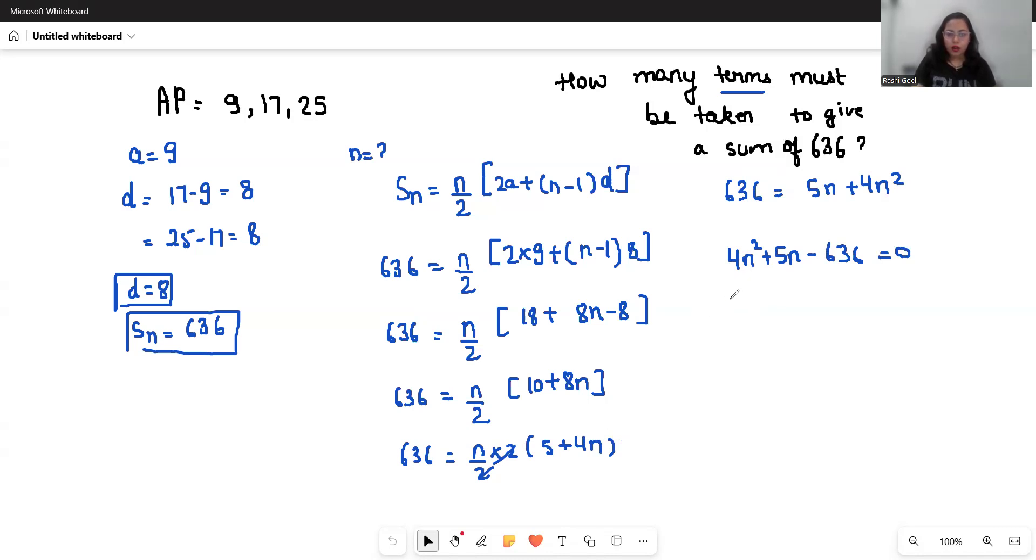Now I can write this 5n as 53n minus 48n. Now from first two terms we cannot take common, so we will write the equation as...